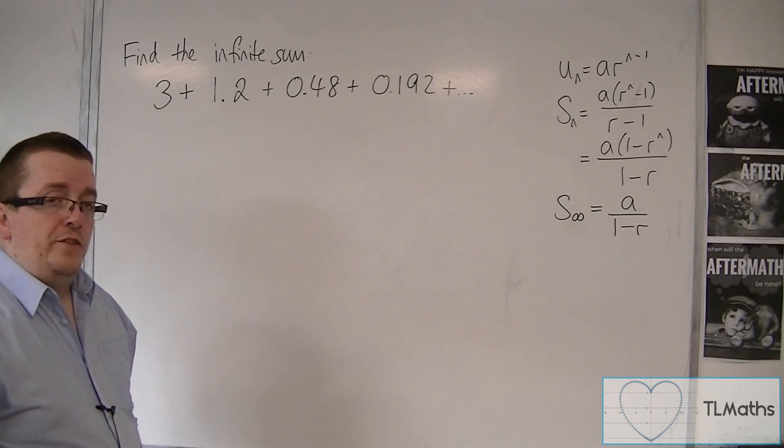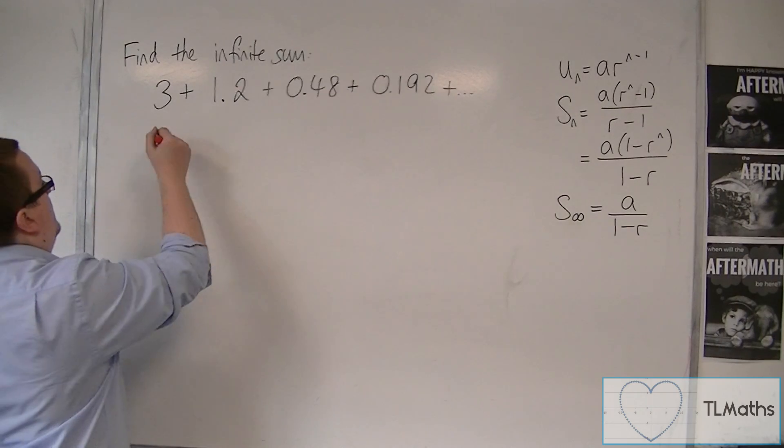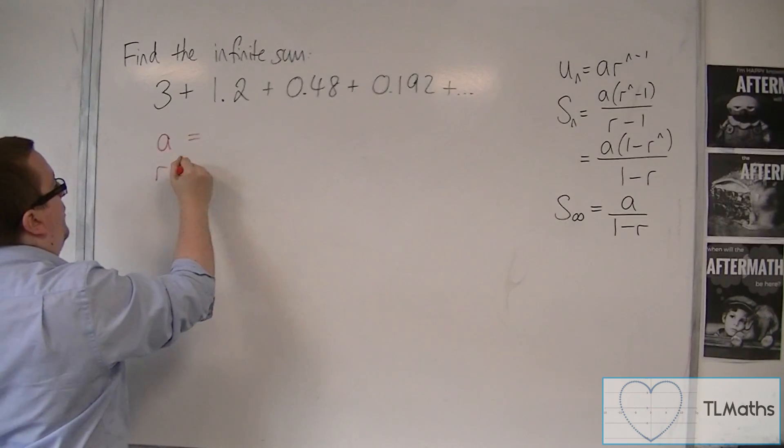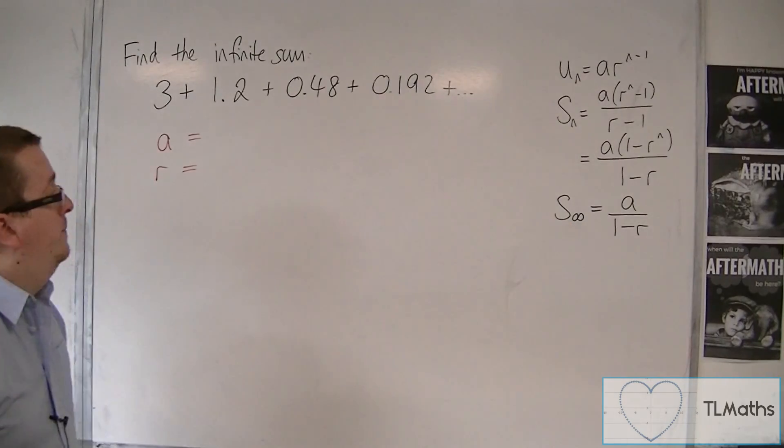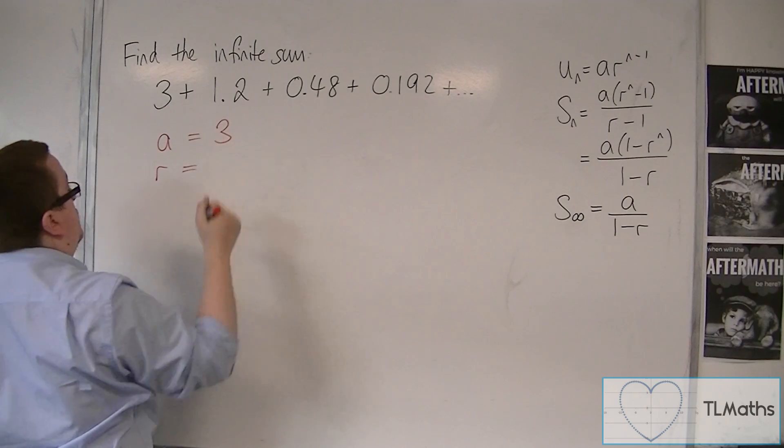So first of all, I need to find A and R. I'm going to use this formula here, but I first need to find that A and R. So A is easy to spot, that's 3.